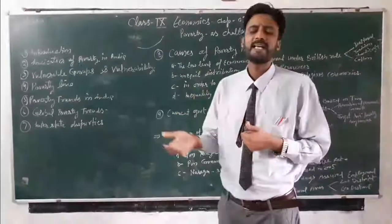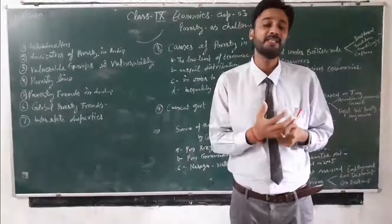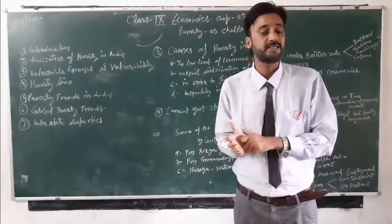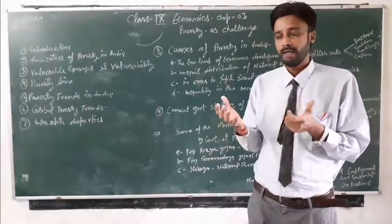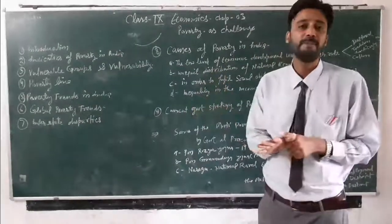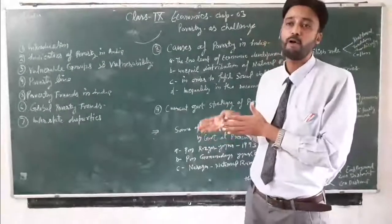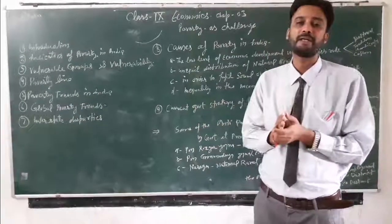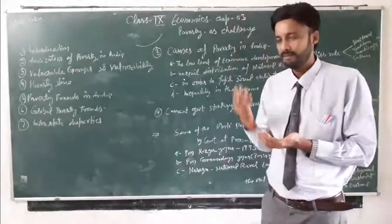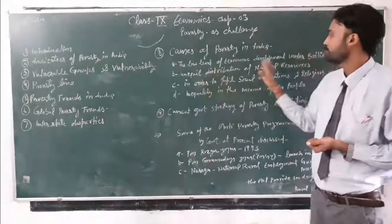In areas where natural resources are adequate — like the URIZA regions — there will be much industrialisation. Where industrialisation happens, employment is created, and people's standard of living improves. But in areas without good natural resources, industrialisation does not happen, leading to unequal distribution of wealth and continued poverty.